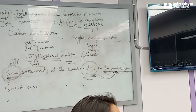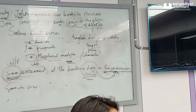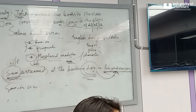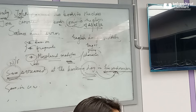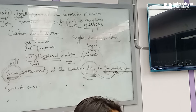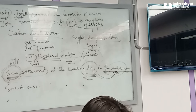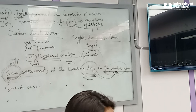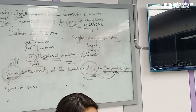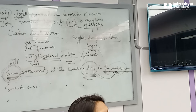Some students think C is correct, some think A. No one chose B. So let's discuss — A people, why do you think A is correct? Just explain the meaning of the sentence to me. I'm not looking for a translation; I'm looking for your understanding.